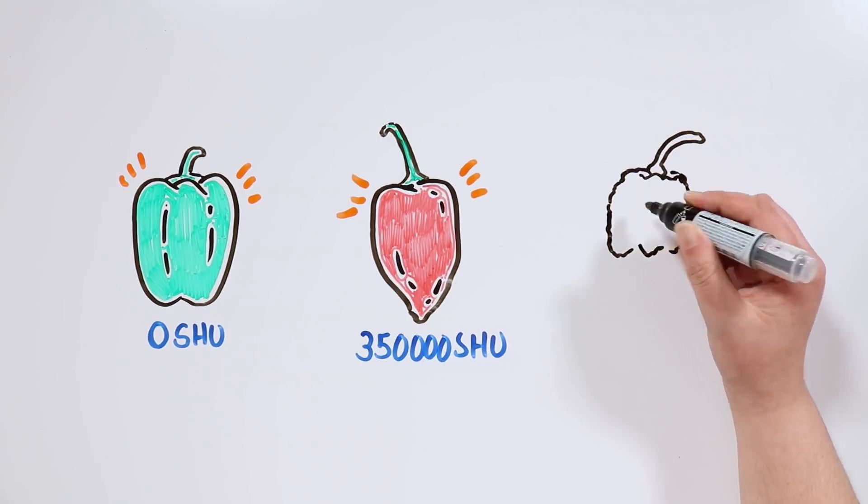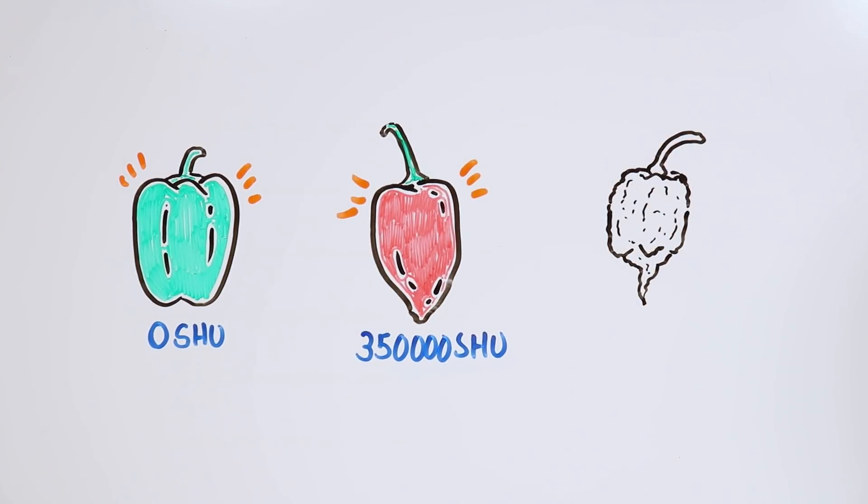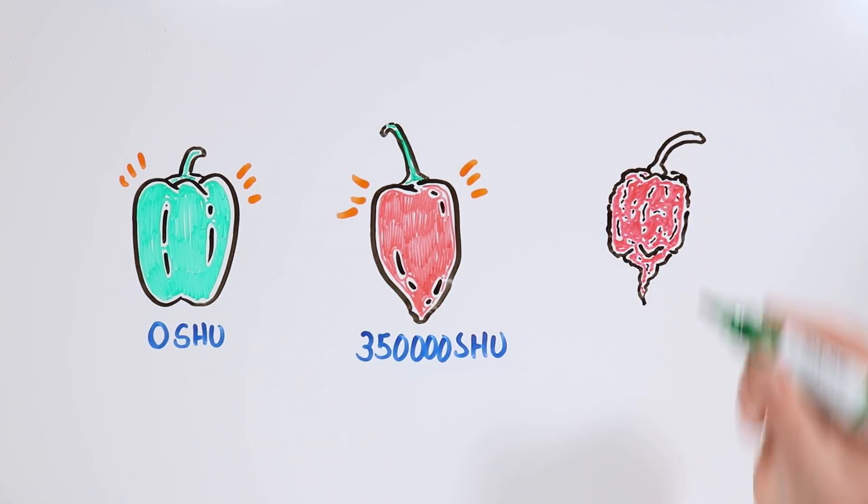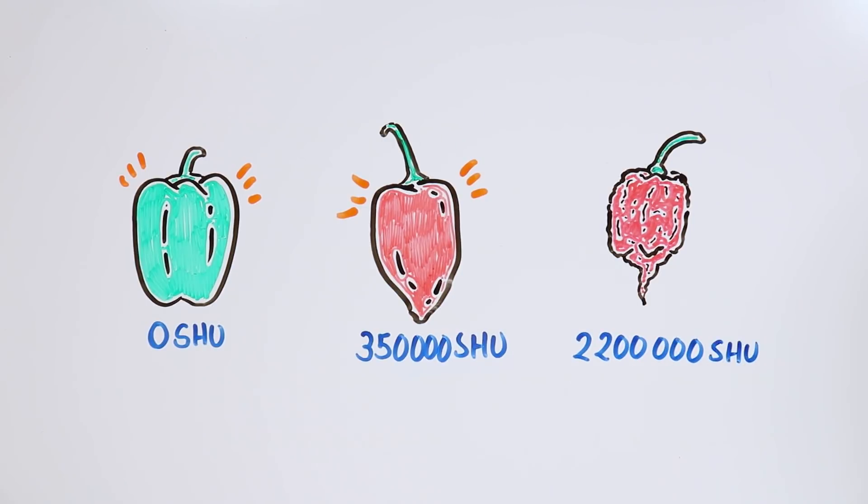However, the chili pepper which holds the world record is the Carolina Reaper, produced in the United States with 2,200,000 units.